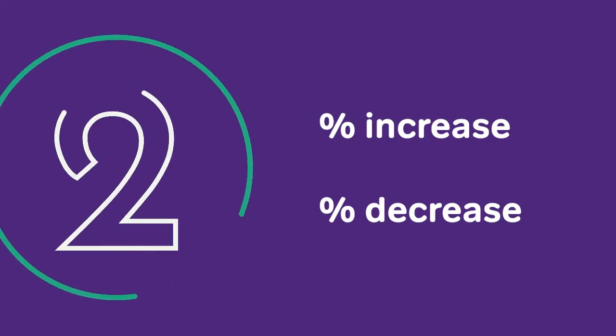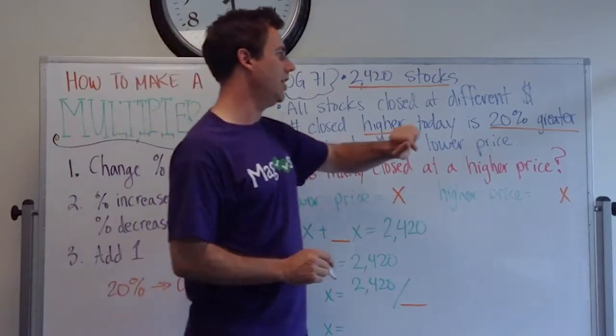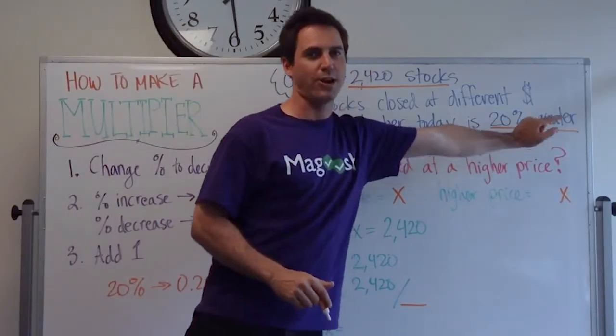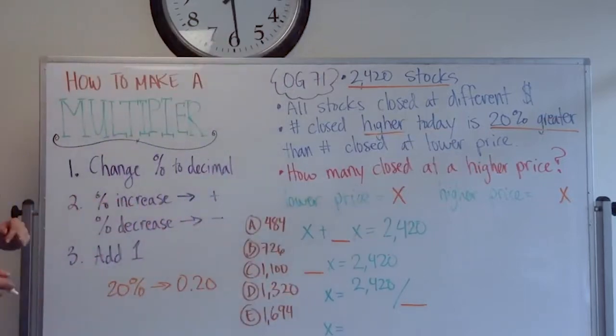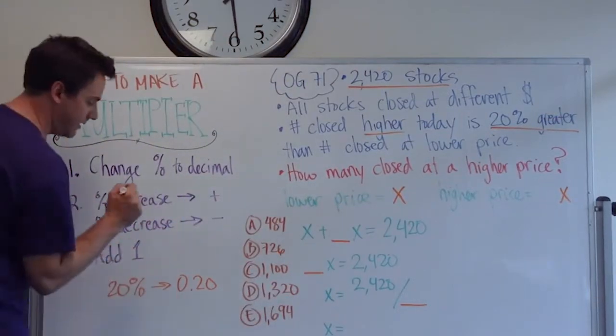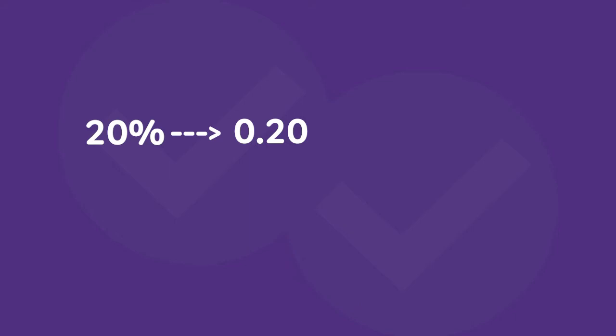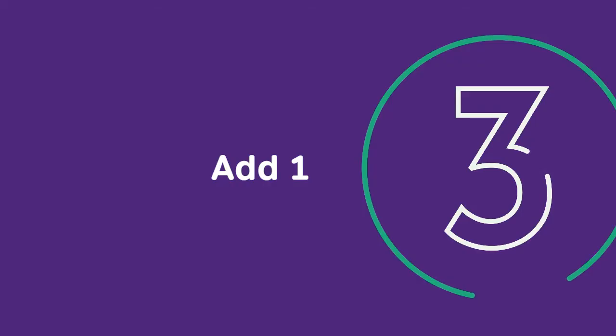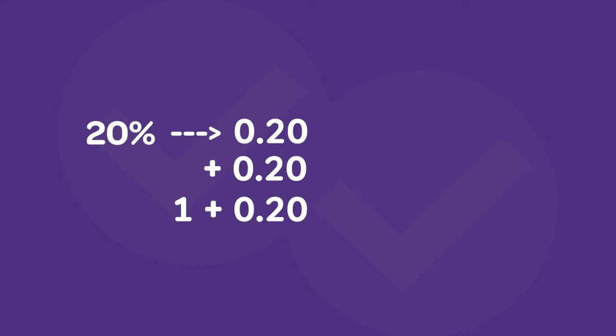Now, step two. Is it a percent increase or percent decrease? Well, it says greater. Greater is synonymous with increase. So we're going to keep it positive. So we can leave it here, plus 0.20. And then finally, we add one. So one plus 0.2 equals 1.2. That is our multiplier.